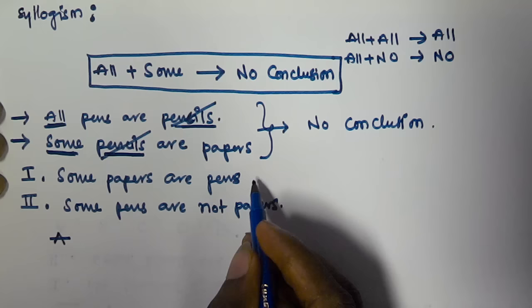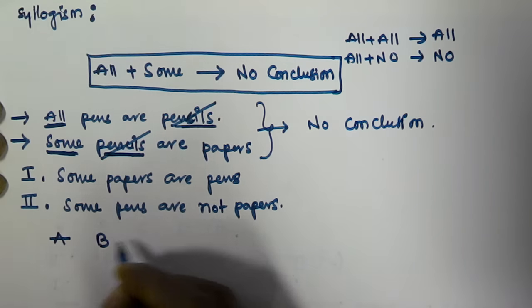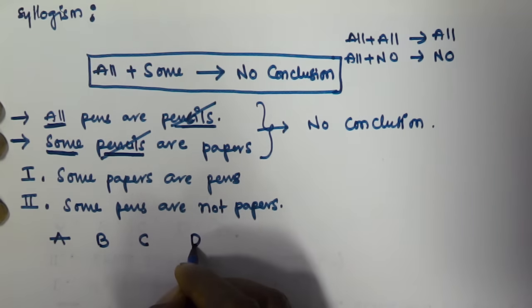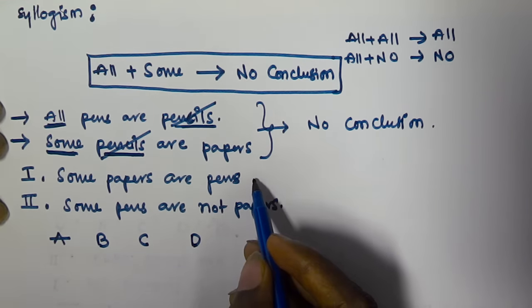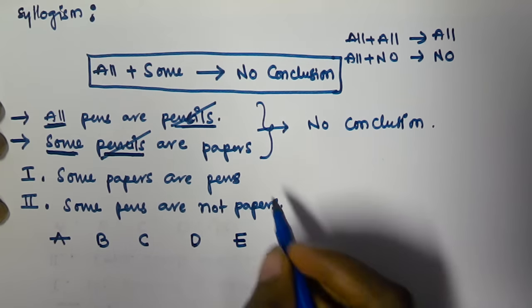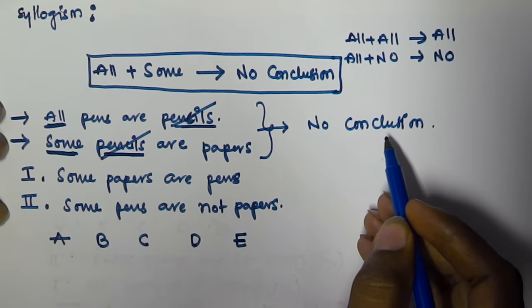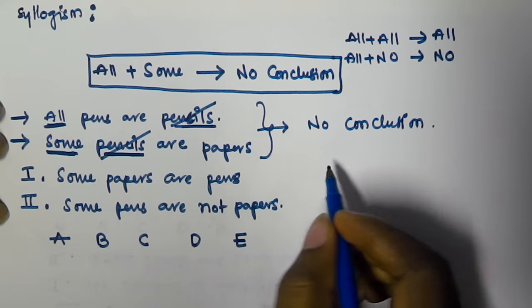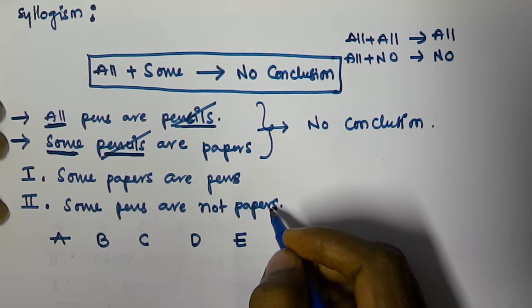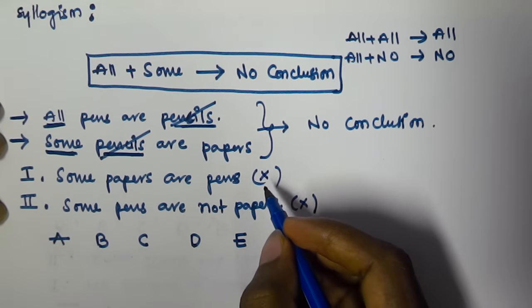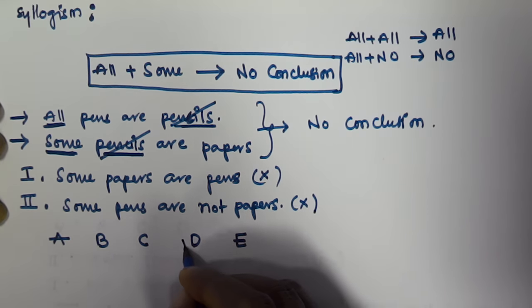If only the first conclusion is true we select option A. If only the second conclusion is true we select option B. If either the first or second conclusion is true we select option C. And if both conclusions are true we select option E. Here, since all plus some gives no conclusion, both given conclusions are always going to be false. Neither statement one is true nor statement two is true, so we select option D.